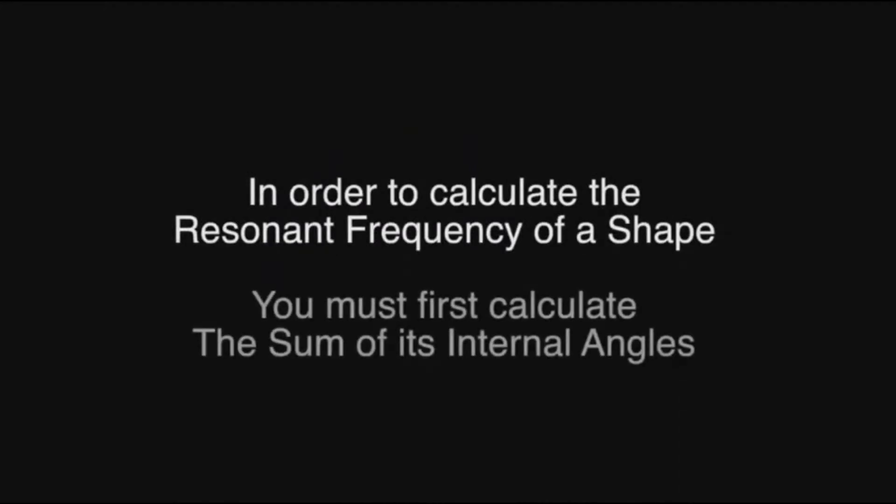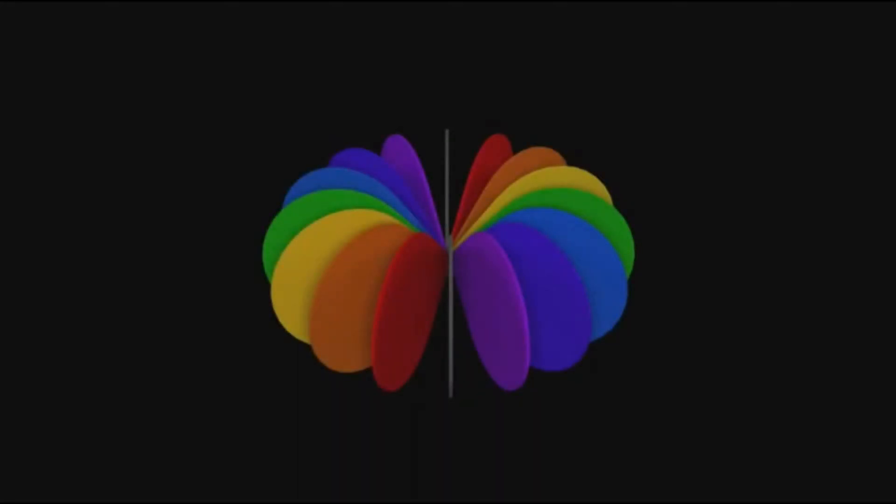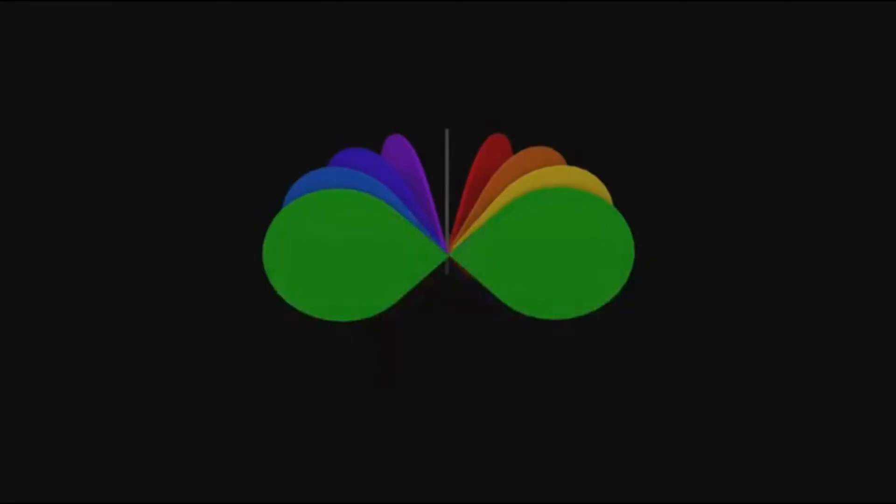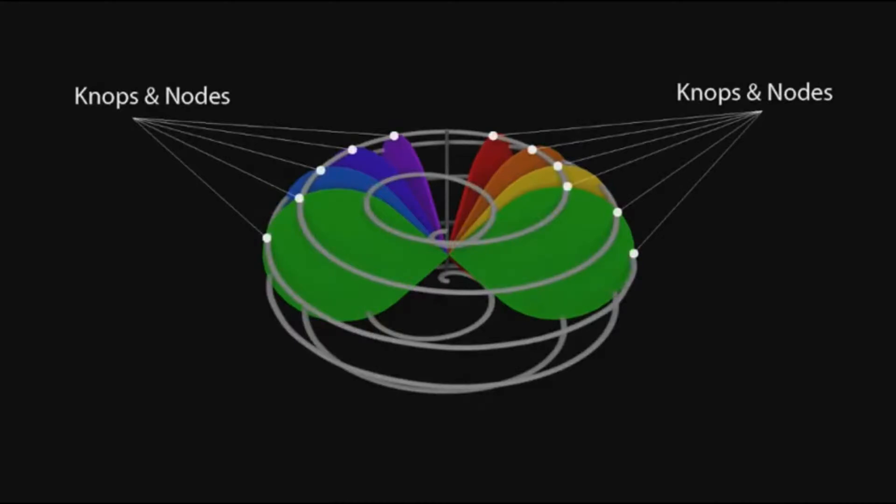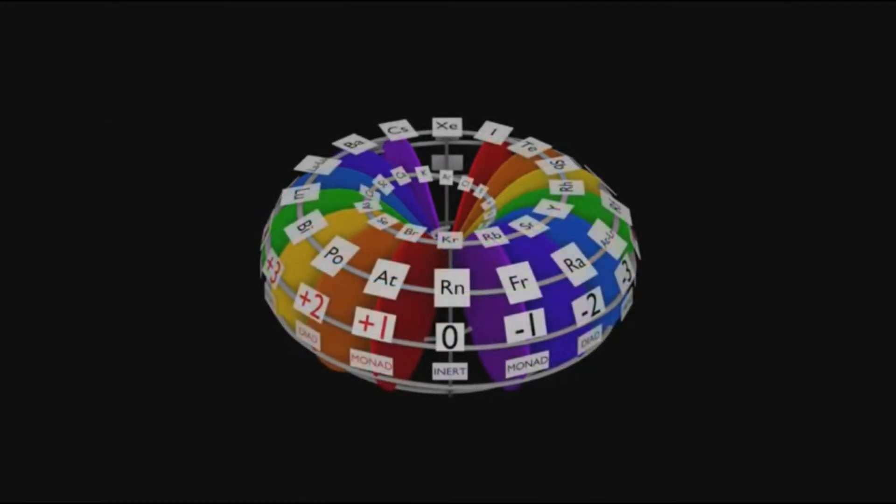In order to calculate the resonant frequency of a shape, you must first calculate the sum of its internal angles. To calculate the resonant frequency of an imploded sphere, we must produce the sum of the internal angles contained within all eight planes. All physical shapes vibrate at the sum of their internal angles, which are determined by the base angle of 22.5 degrees and its octaves. The angle between the eight planes and the zero-point equatorial center also determines the location of the knot and nodes on the Fibonacci-phi curve on the pi surface. This connects and defines the placement of all the elements.